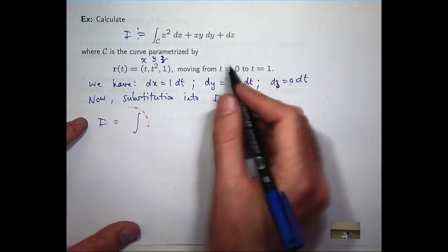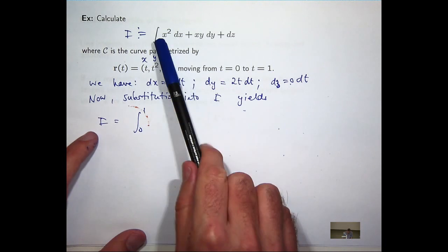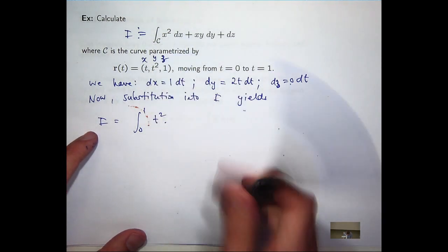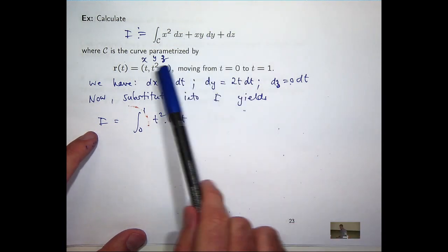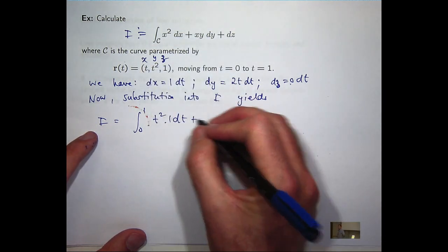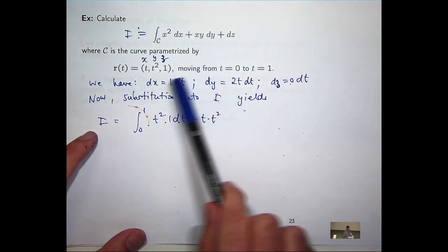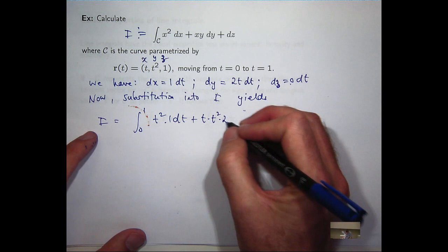My limits of integration are 1 and 0. x squared is going to become t squared, dx is 1 dt. x times y, that's going to be t times t squared, dy is 2t dt.